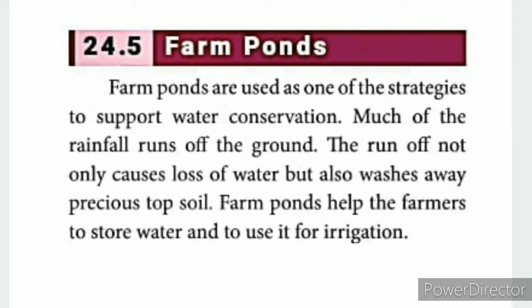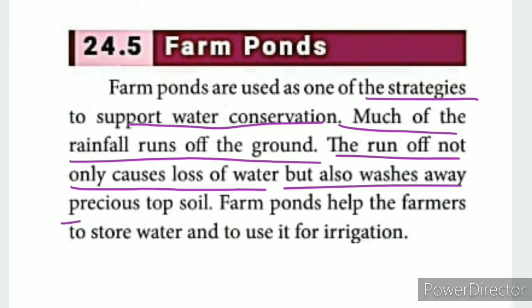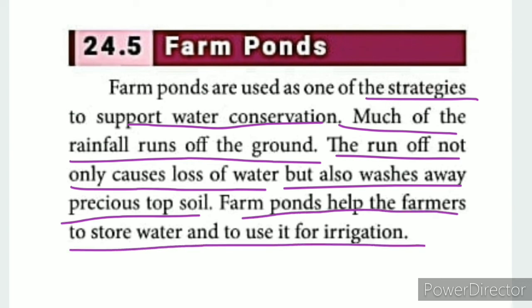Farm ponds are a water conservation strategy. Rivers and desert areas experience heavy runoff. As we find, there is water flowing into rivers but runoff not only causes loss of water, it also washes away the precious topsoil. Farm ponds help the farmer to store water and use it for irrigation.